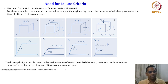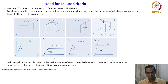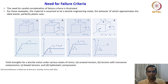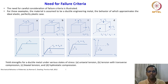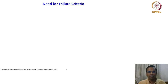What we have seen here is the yield strength for a ductile metal under various states of stress — namely uniaxial tension, tension with transverse compression, biaxial tension, and hydrostatic compression. Under different types of stress states, the material exhibits different behavior in terms of yielding. Unless we have the failure criterion — normally yield or fracture criterion — we do not know how this material is going to respond when the stress is raised to a higher level. That is the core idea of looking at the need for failure criteria.